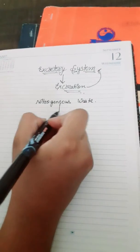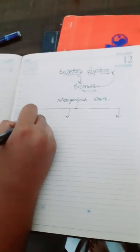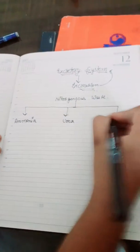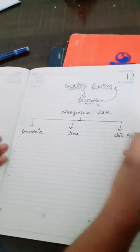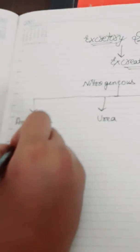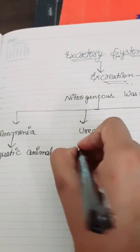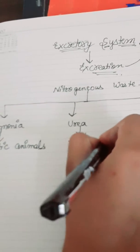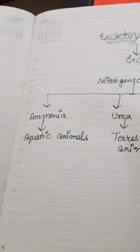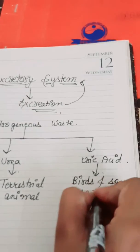There are three types of nitrogenous waste: ammonia, urea, and uric acid. Ammonia is the waste generated by aquatic animals. Urea is the waste generated by terrestrial animals. Uric acid is the waste generated by birds and some insects.